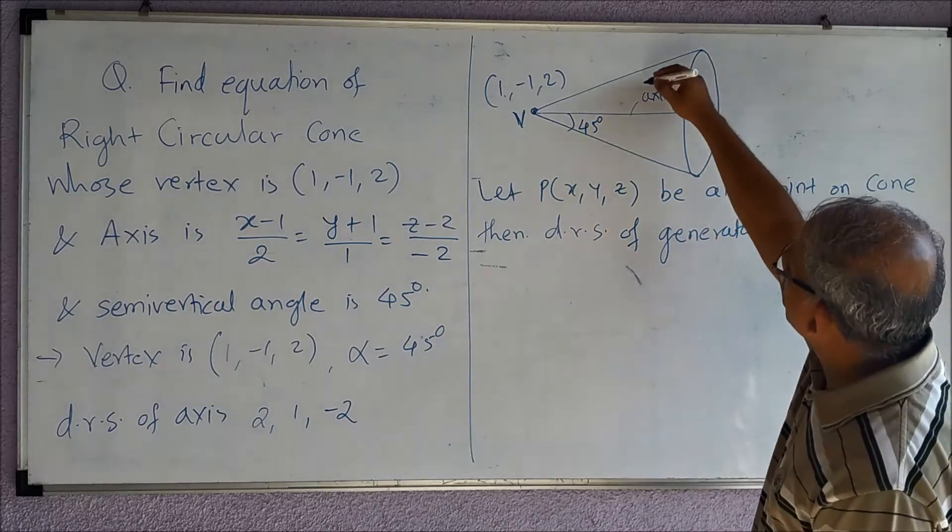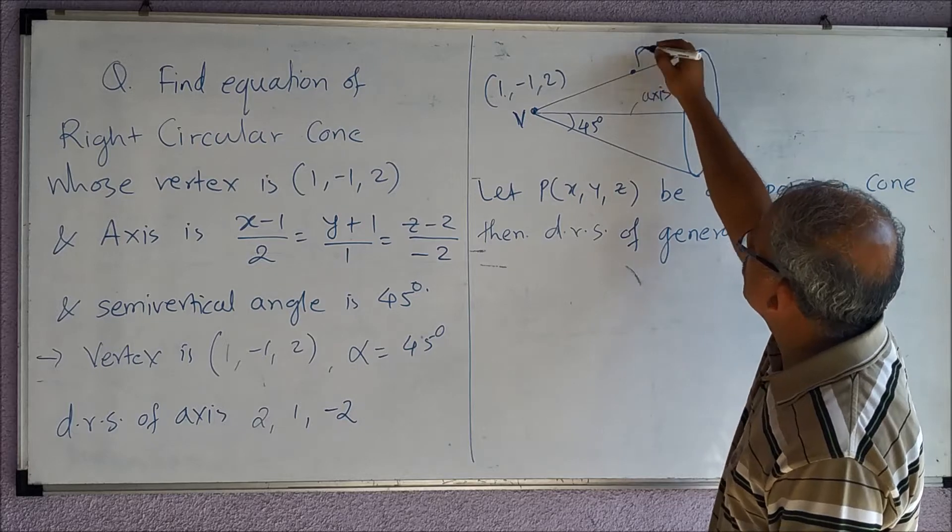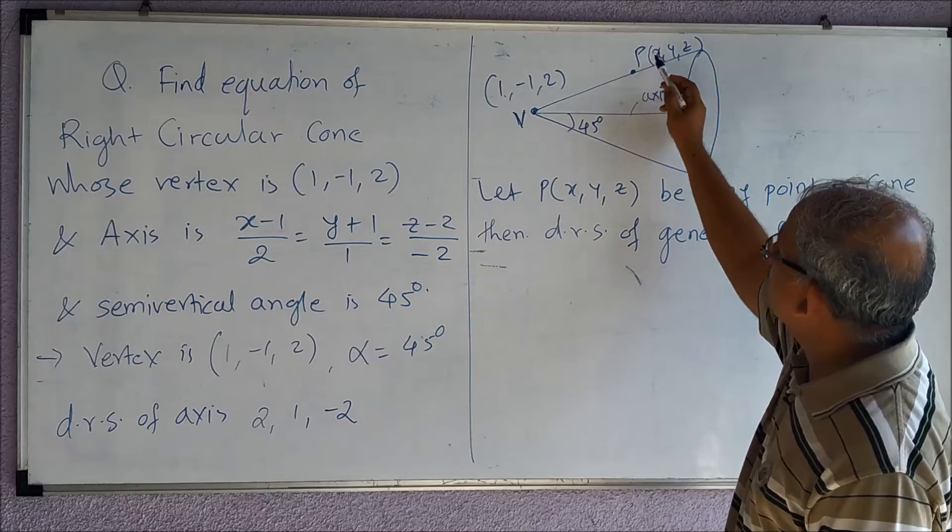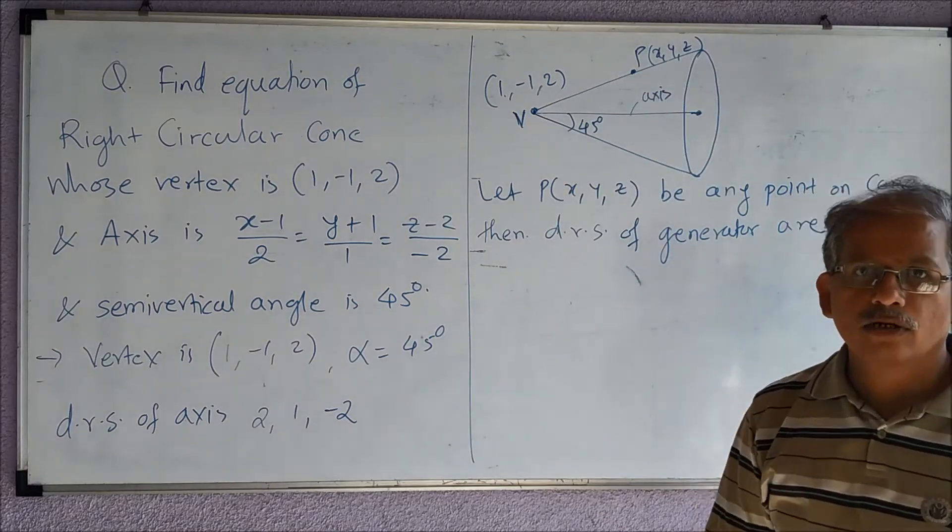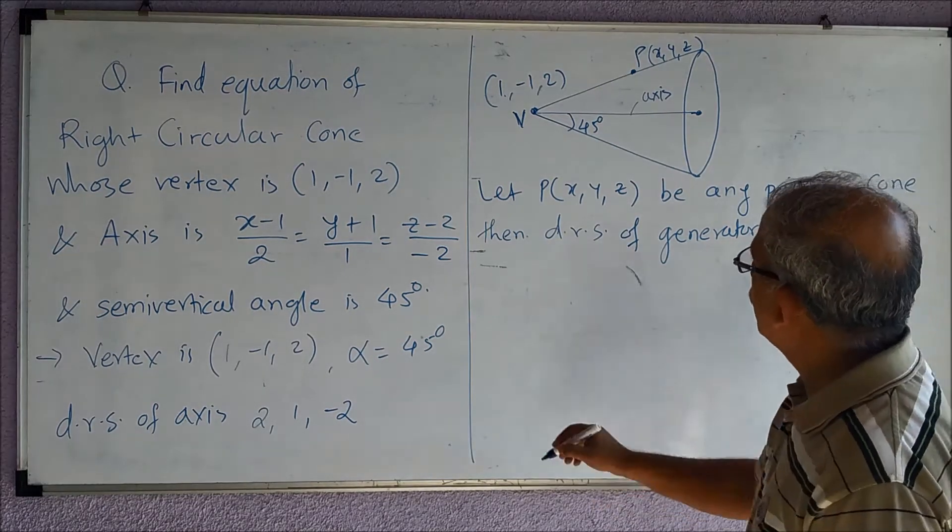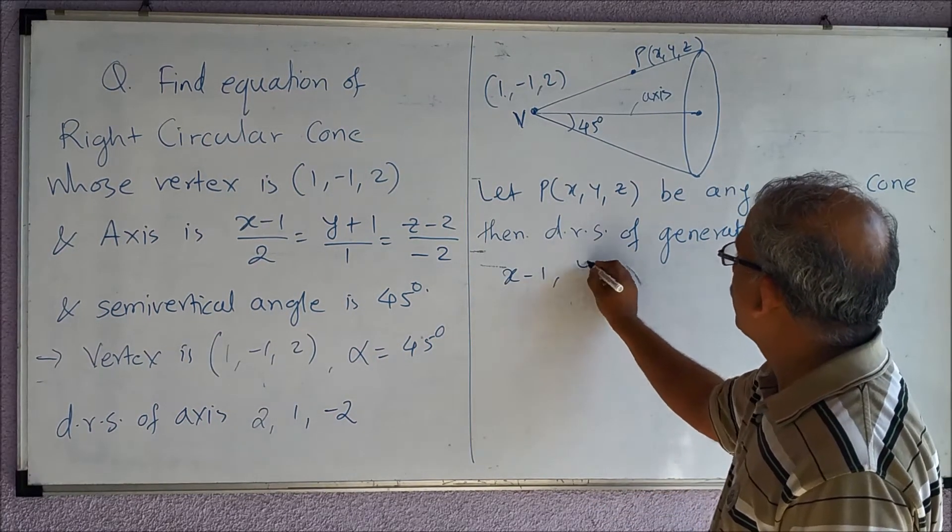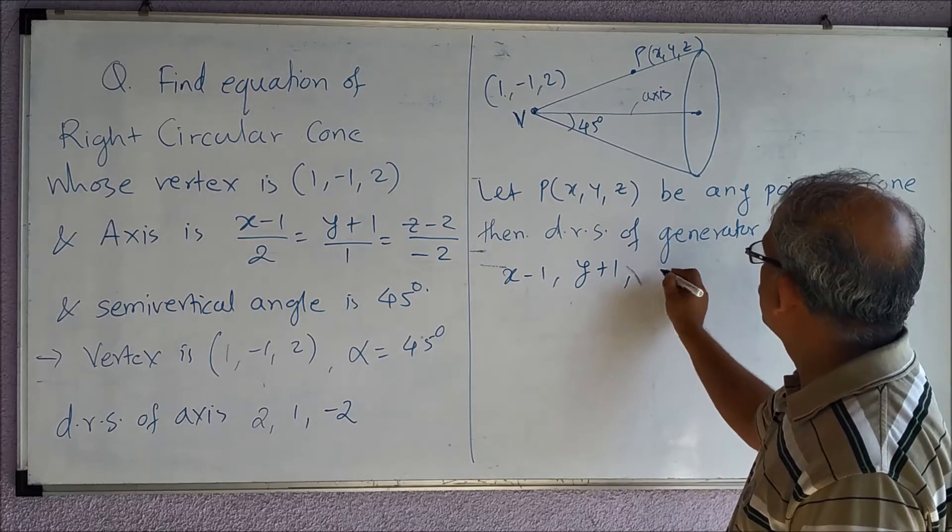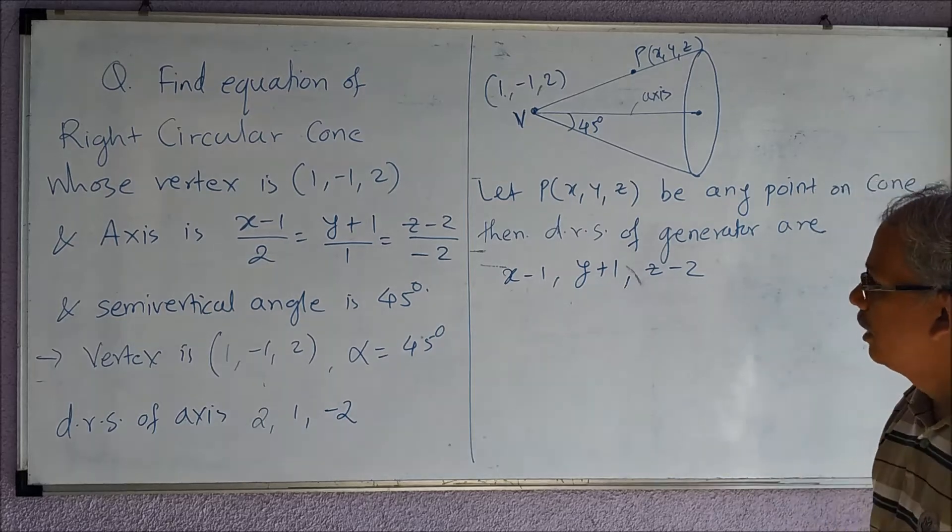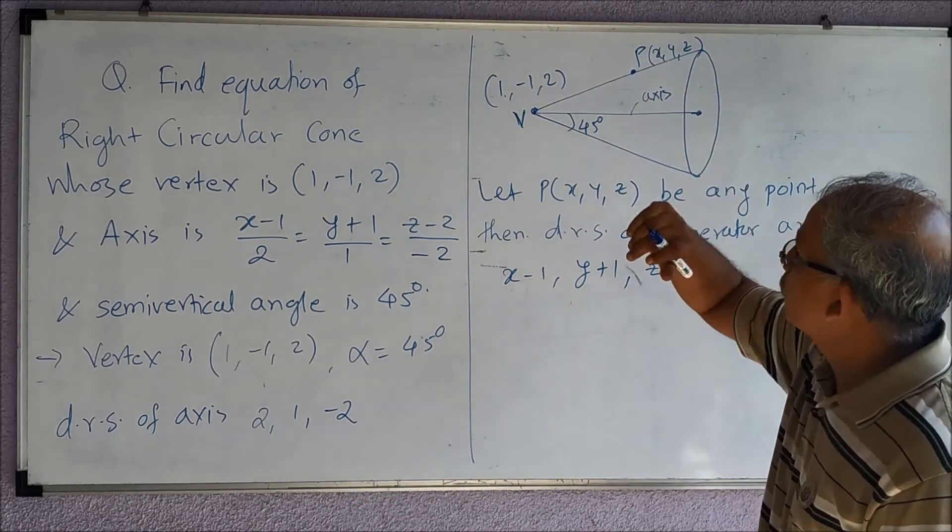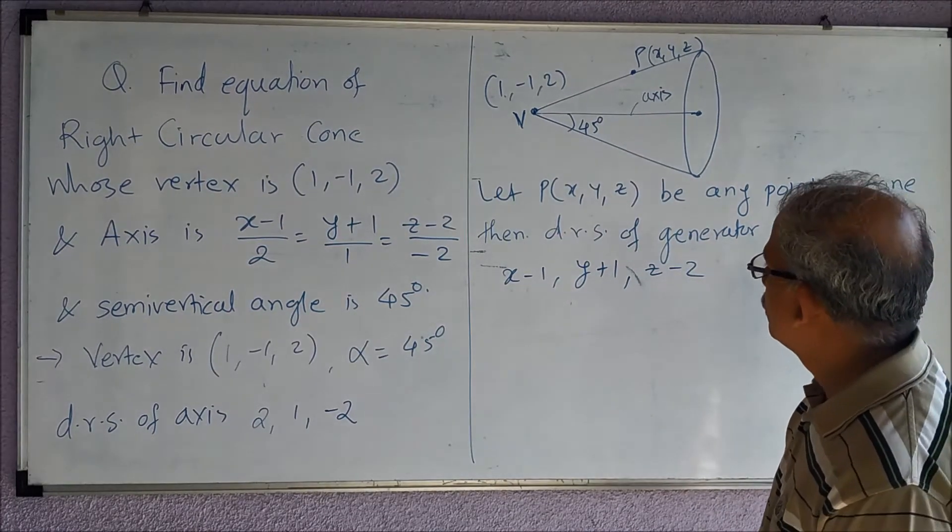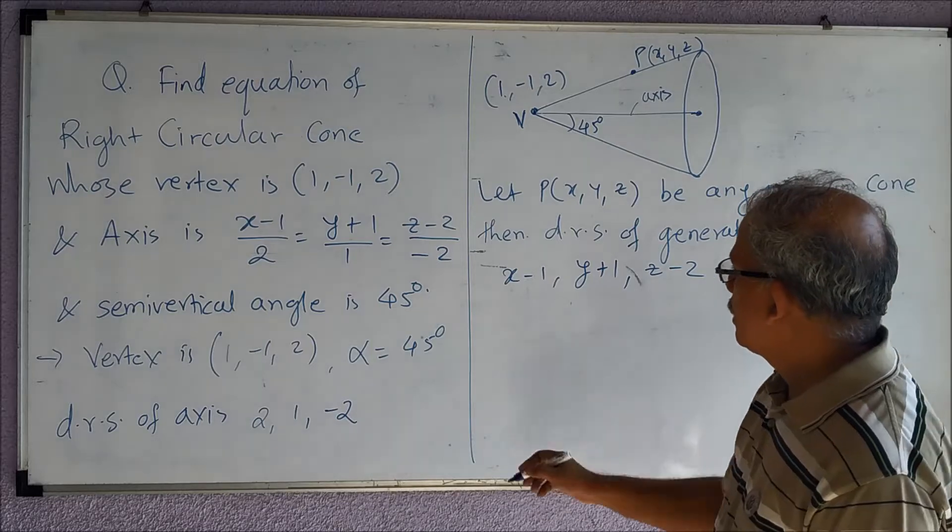So that P point is somewhere here, so this is P point, P(x, y, z). The difference between the coordinates of V and P gives us the direction ratios of the generator, so they are (x-1), (y+1), (z-2). So we know the direction ratios of the generator, we know the direction ratios of the axis, and we know the angle, that is 45 degrees, between them.